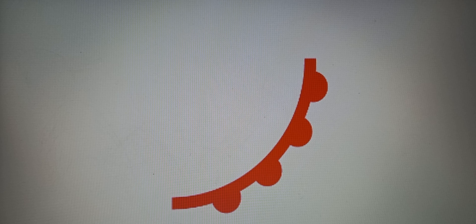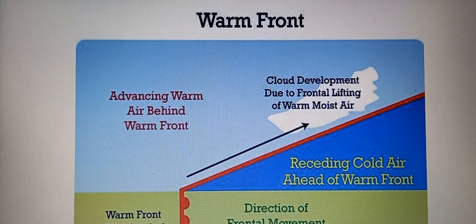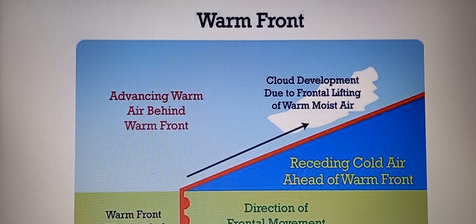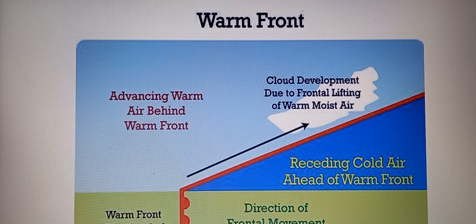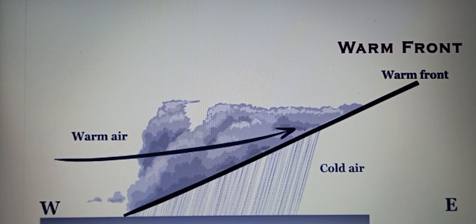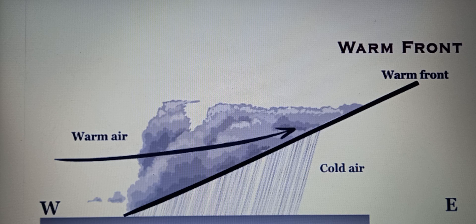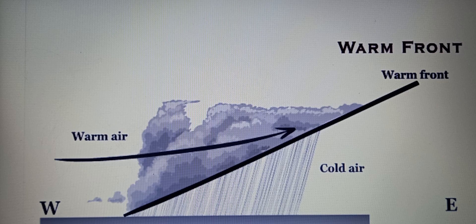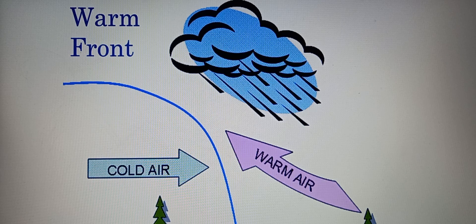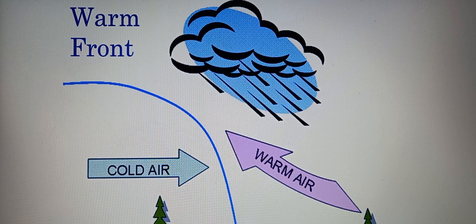A warm front on a weather map is a solid red line with semicircles pointing in the direction of the front's movement. It forms when warm, moist air moves into an area occupied by cooler air. The warm air rises over the cooler air because it is less dense, creating clouds and often leading to light to moderate rainfall. As the warm front passes, it brings milder temperatures and can change wind direction.